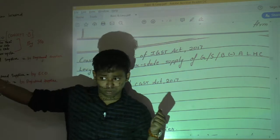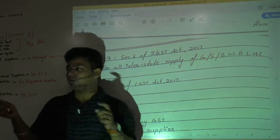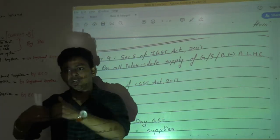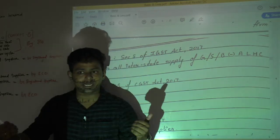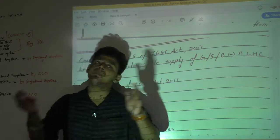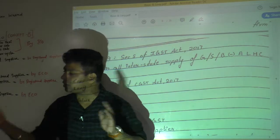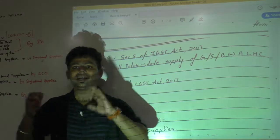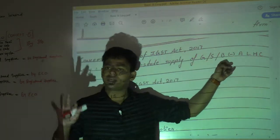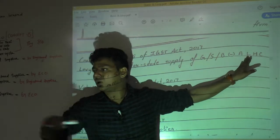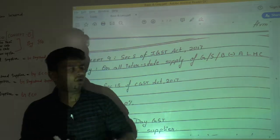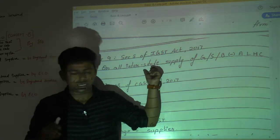What was the language in 9-1? All intrastate. And what is interstate we have already written, yes or no? When the supply happens between two states or two union territories or one union territory and another state. So when location of supplier and place of supply is in different state, different union territory, or state and union territory, we call it interstate supply. And in interstate supply we pay IGST Act on supply of goods or services or both, but minus alcoholic liquor for human consumption. Don't you think the language is exactly the same? Only one word is different. Intra has become inter.